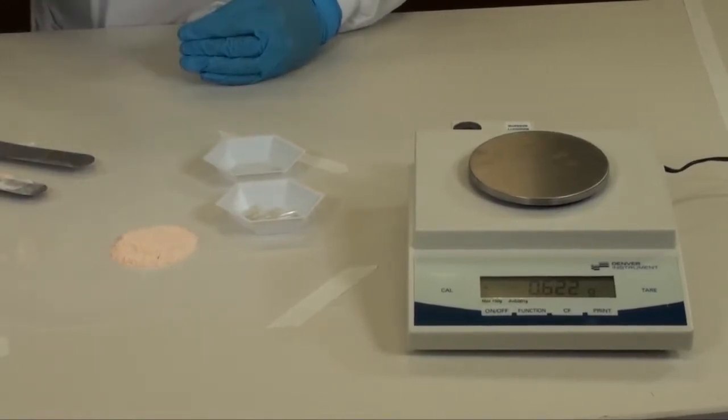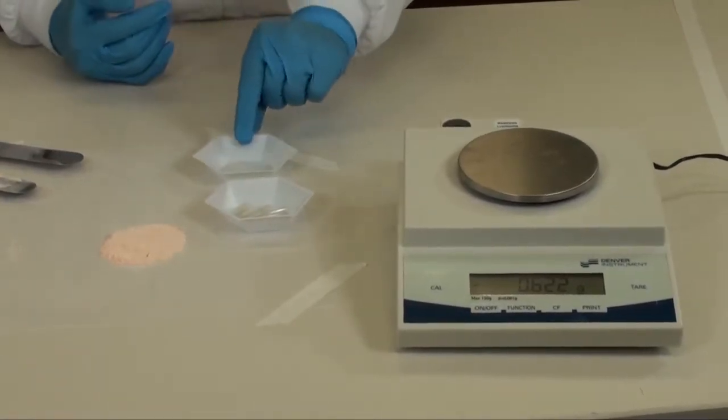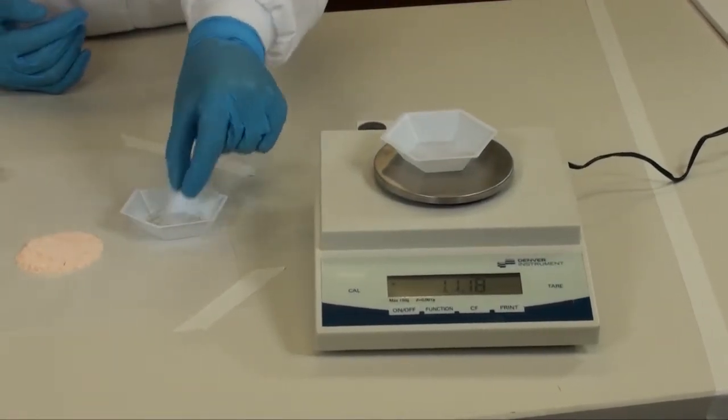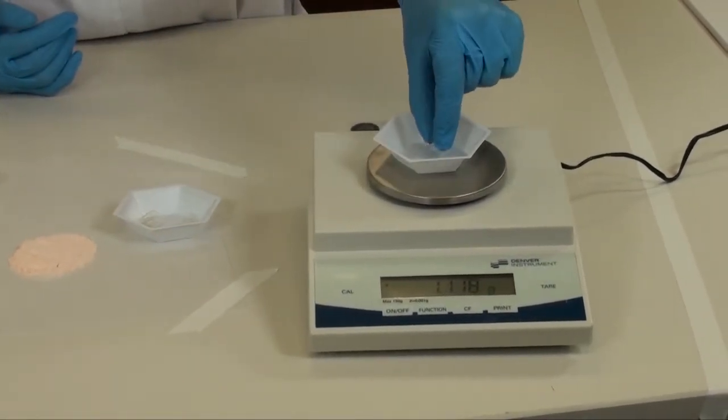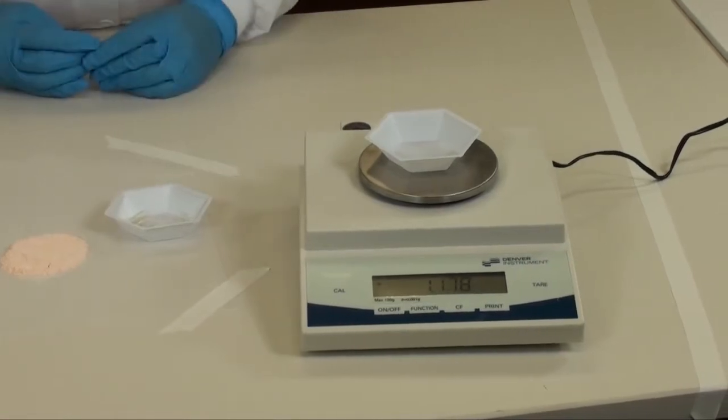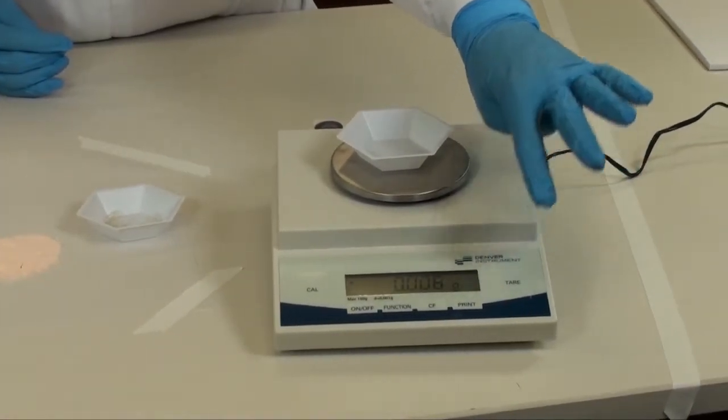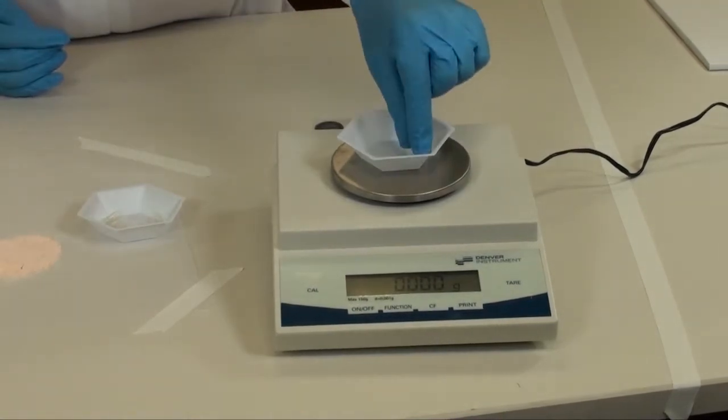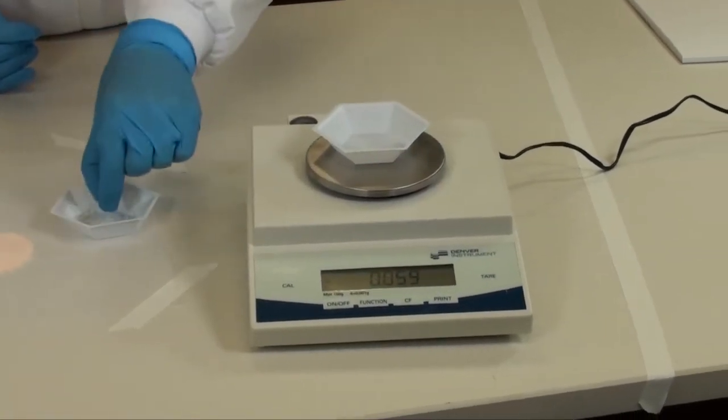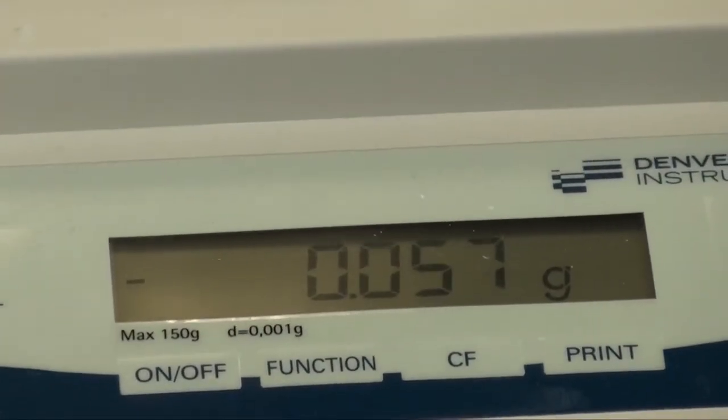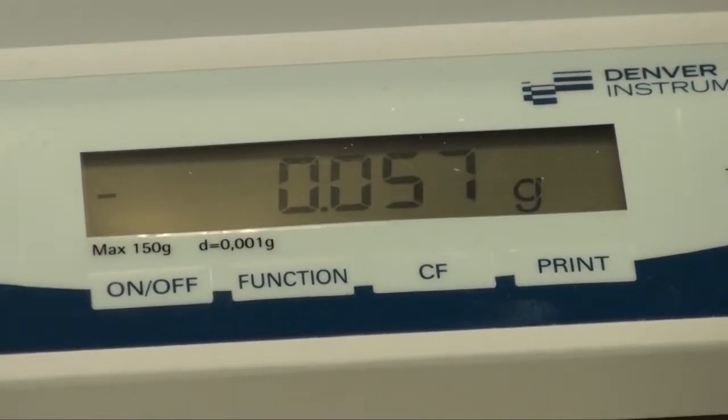Now get your scale ready for weighing. Place a medium weigh boat and an empty capsule, the same size that you are going to use in your prescription, and tare the scale. Remove the empty capsule. Please note your scale will read a negative number. Remember, this is the weight of the empty capsule.